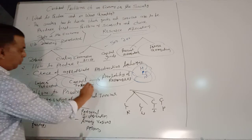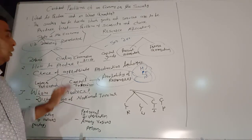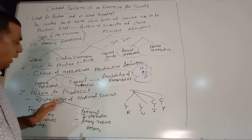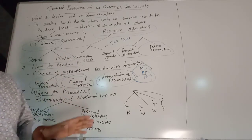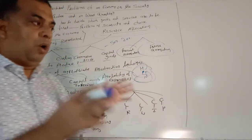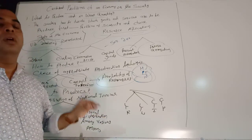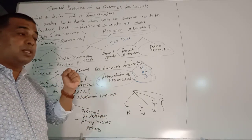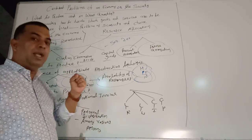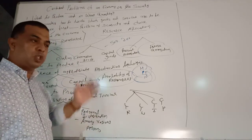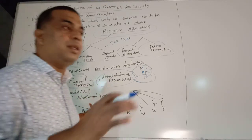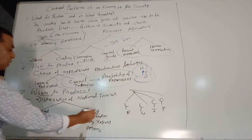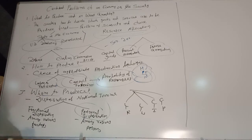Next is for whom to produce — this is the most important problem. The 'for whom to produce' problem indicates the distribution of national income: how to allocate or distribute national income among various persons of the society. As we discussed in the welfare definition, production of wealth is important but distribution and consumption are even more important. How to distribute national income among various persons of society is called personal distribution.